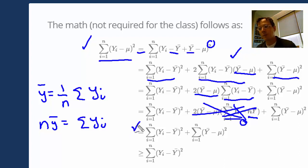Moving on to the next line, I have summation y_i minus y bar squared, adding those up, and summation y bar minus mu squared.